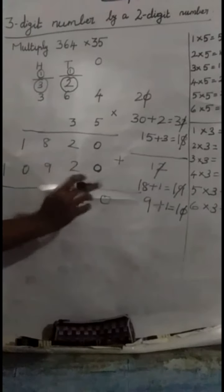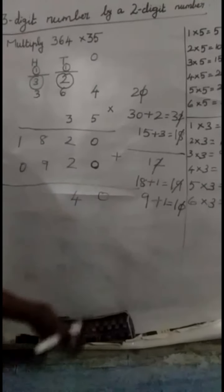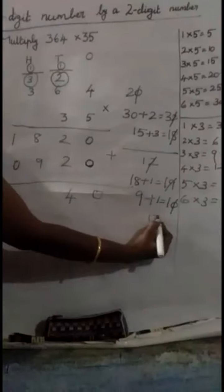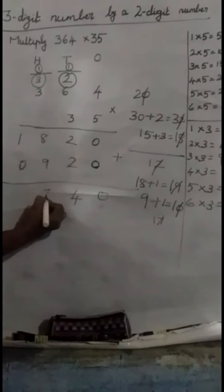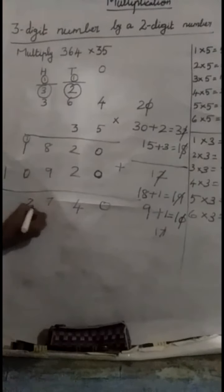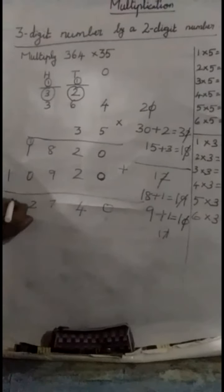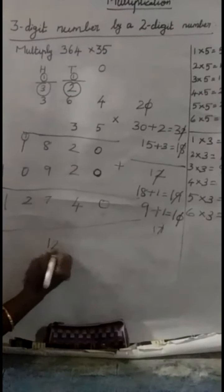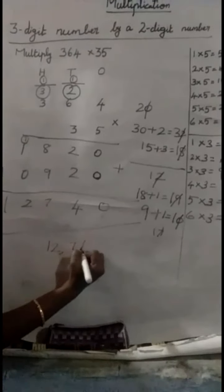8 plus 9. Again, the same addition. 8 in the mind. 9 in the finger. We should use after number. So, 8 plus 9 is 17. 2 digit number. 7 here. 1 in the next place. 1 plus 1. 2. Here, 1 only. So, what's a product here? 12,740.